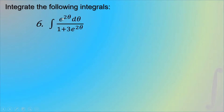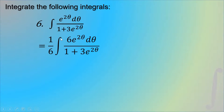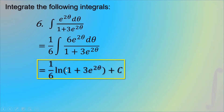Sixth example: the integral of e raised to 2 theta times d theta over 1 plus 3e raised to 2 theta. Differentiating the denominator gives 6e raised to 2 theta d theta. We lack the constant 6, so we place one-sixth outside the integral sign. That gives one-sixth times the integral of 6e raised to 2 theta d theta over 1 plus 3e raised to 2 theta. Using the natural logarithm, the result is one-sixth ln of the quantity (1 plus 3e raised to 2 theta) plus C.